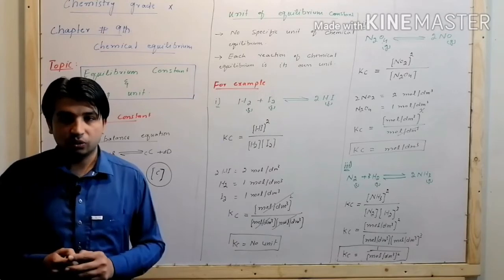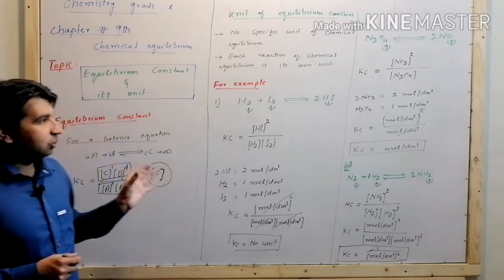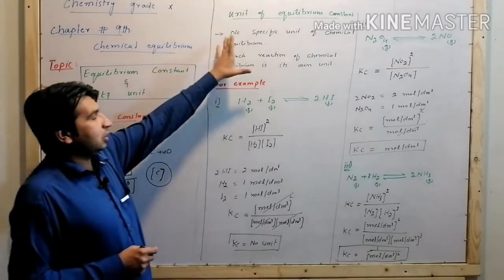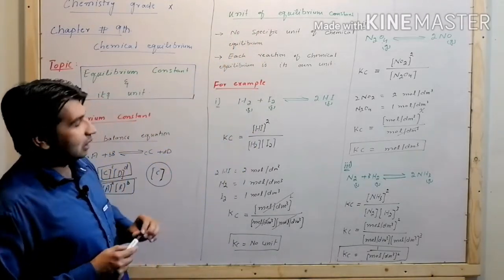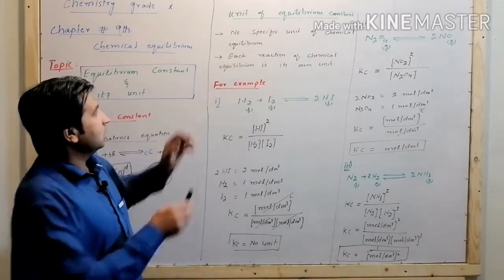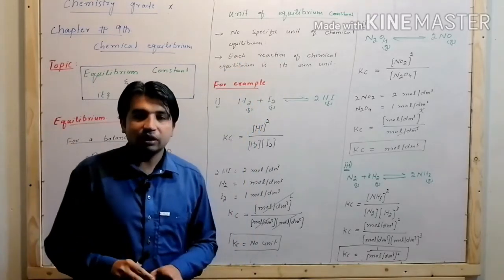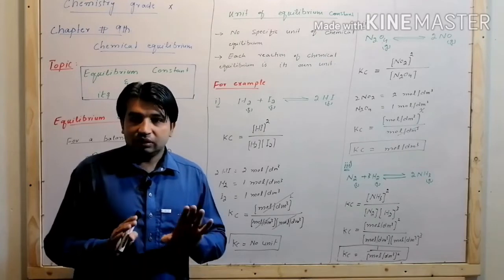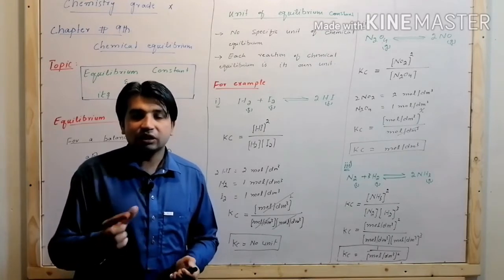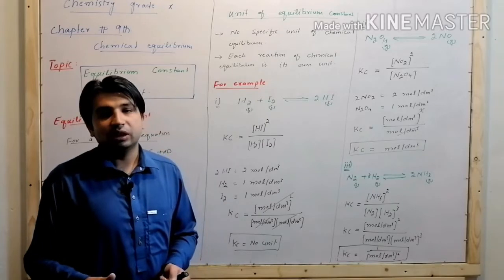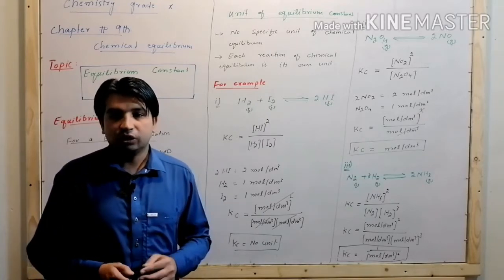The chemical collection is combined. The next step is the unit of the equilibrium constant. The equilibrium constant depends on the chemical reaction and its units. There is no single specific unit for chemical equilibrium — in every reaction, the equilibrium constant has its own units.